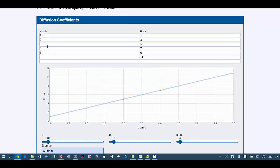We have flow rates of 1, 2, 3, 4, etc. centimetres per second. And very conveniently, we've got H is of 1, 3, 5, 7, 9, and 11. They form a nice straight line.